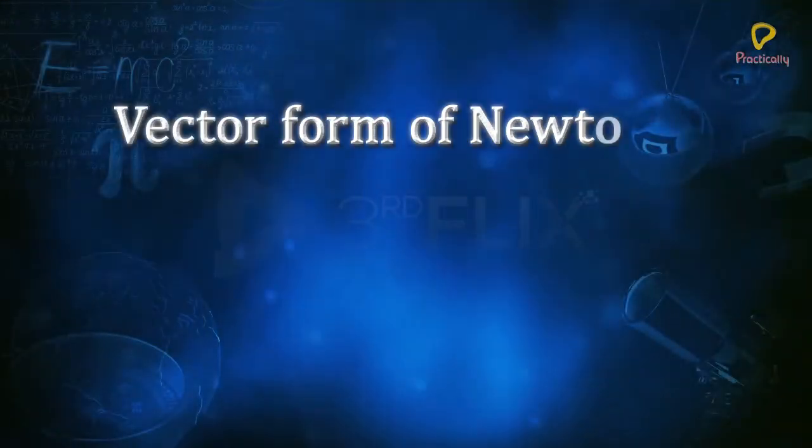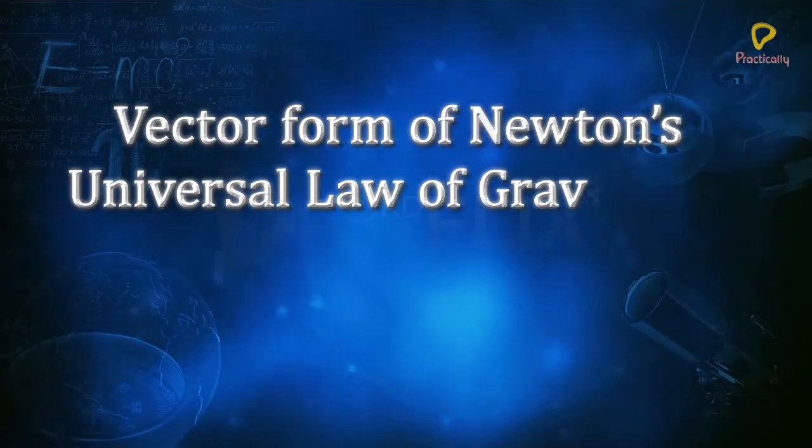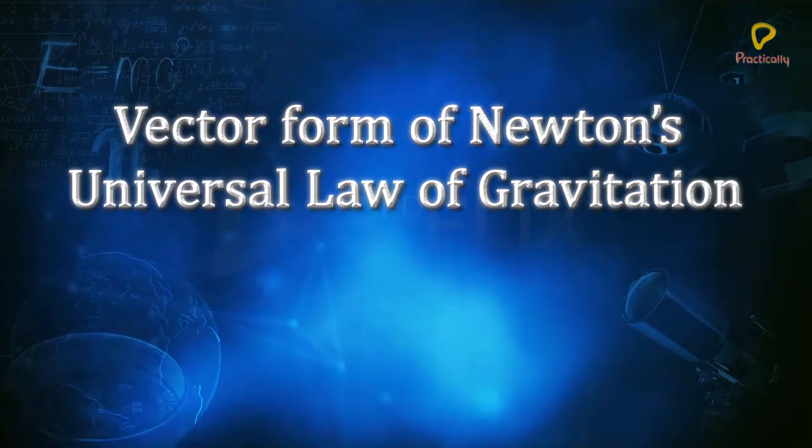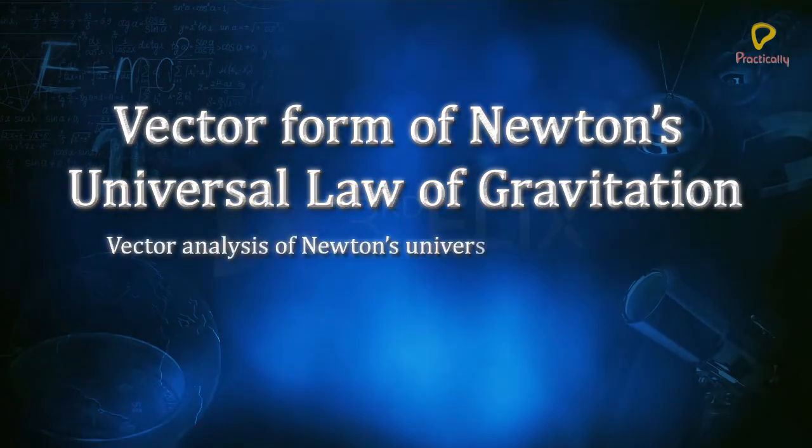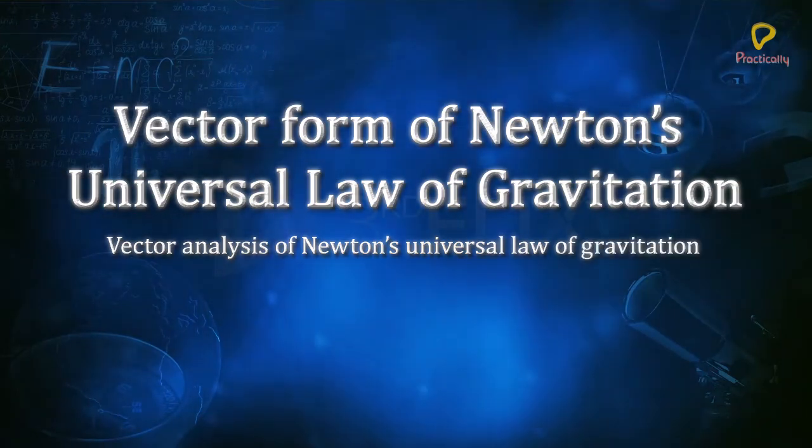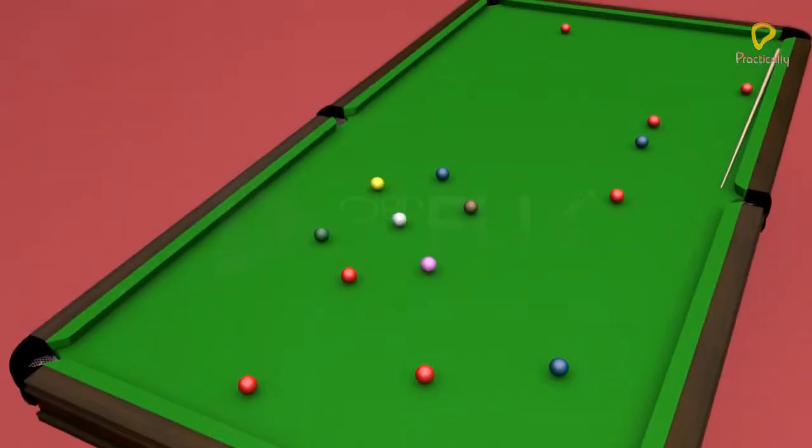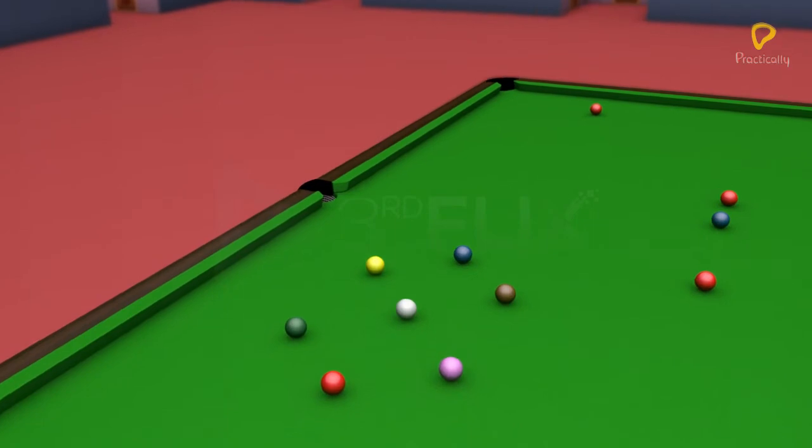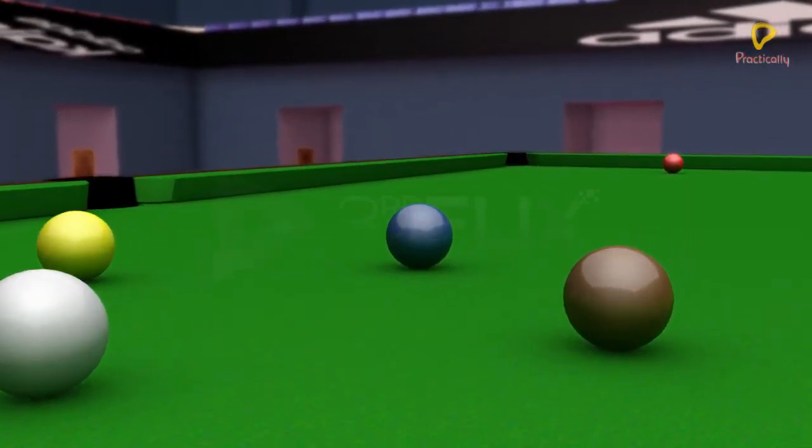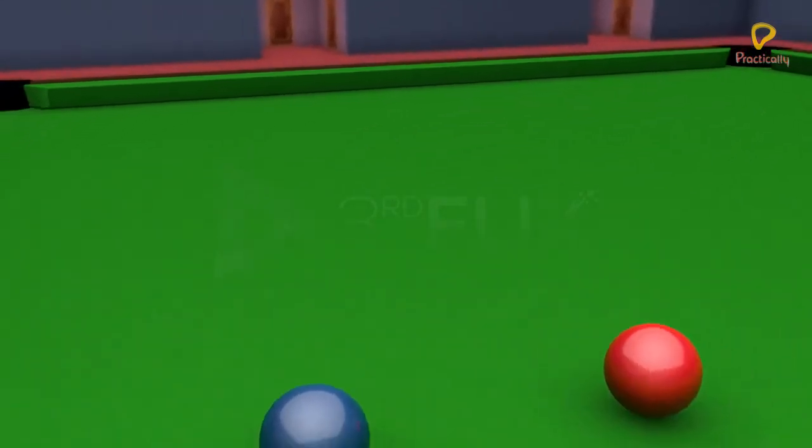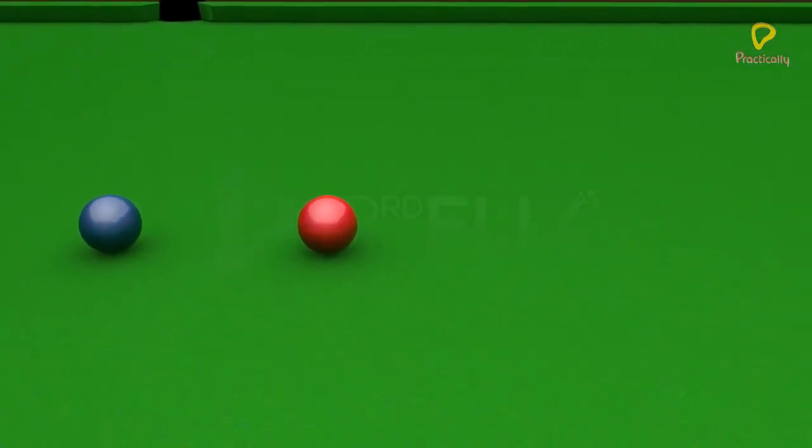Vector form of Newton's universal law of gravitation. Objective: vector analysis of Newton's universal law of gravitation. Since the force is a vector quantity, let's discuss the vector form of Newton's law of gravitation. Consider two particles.